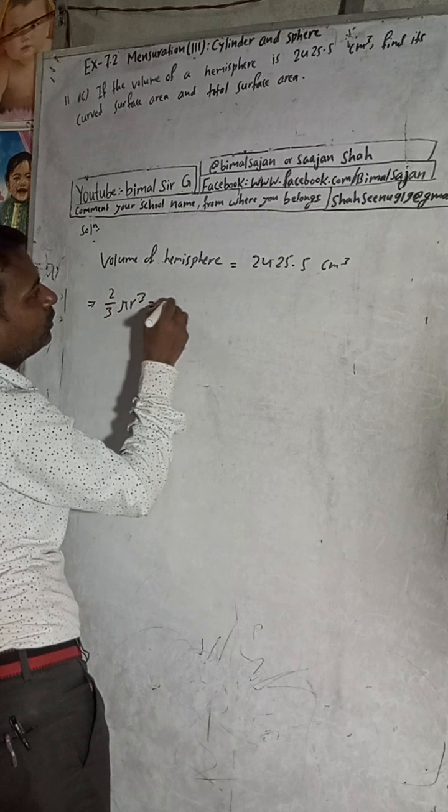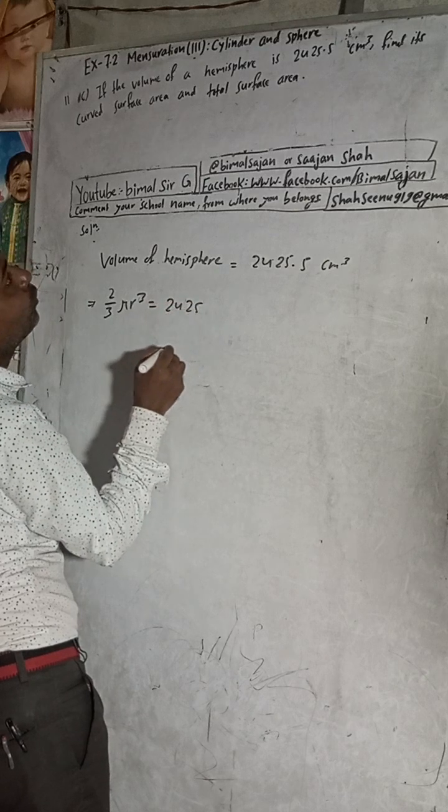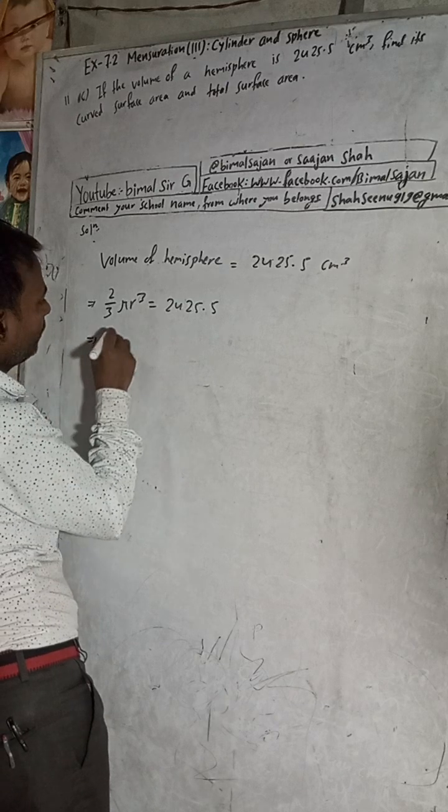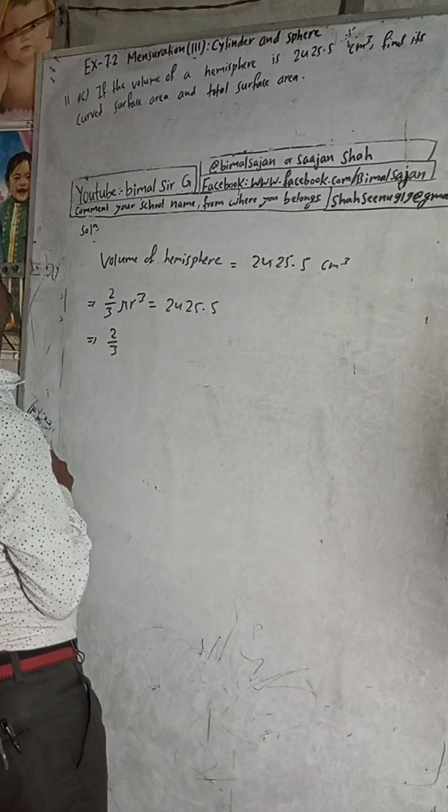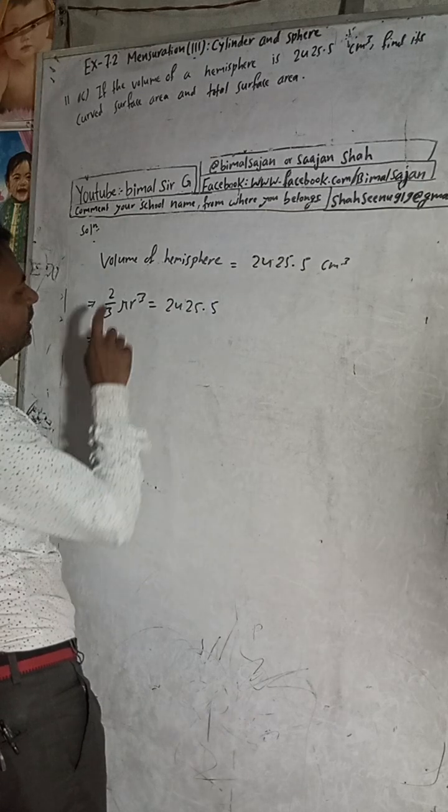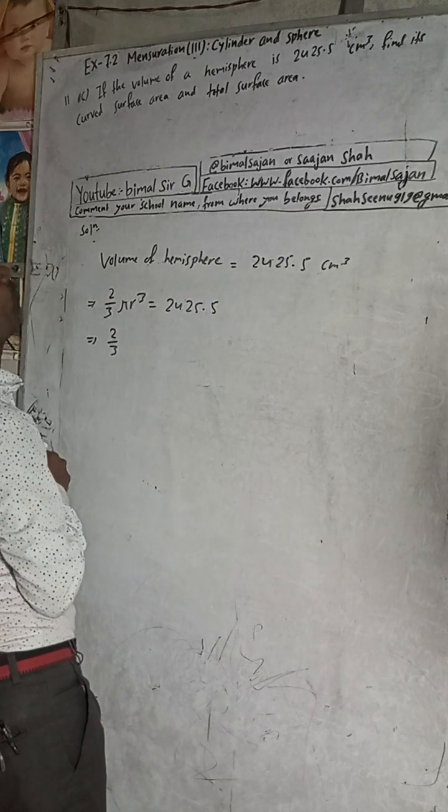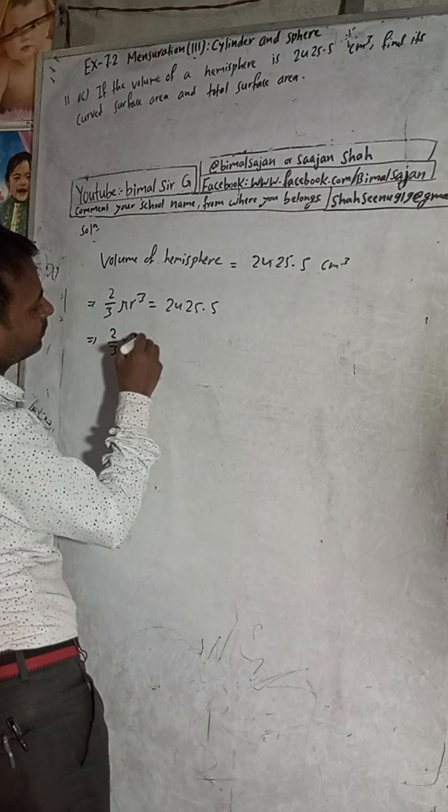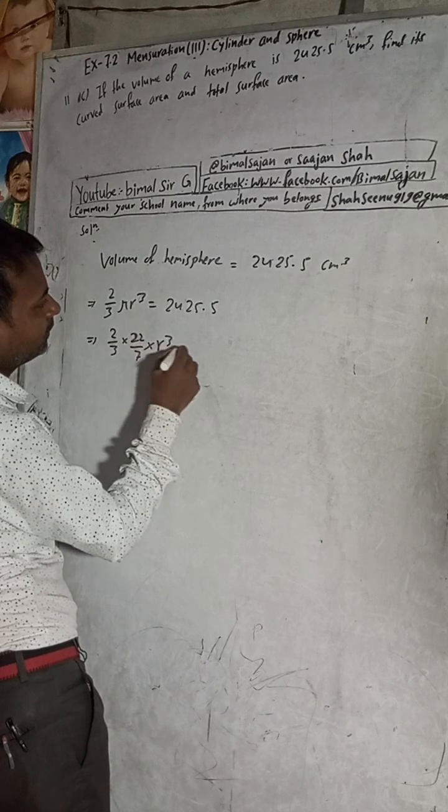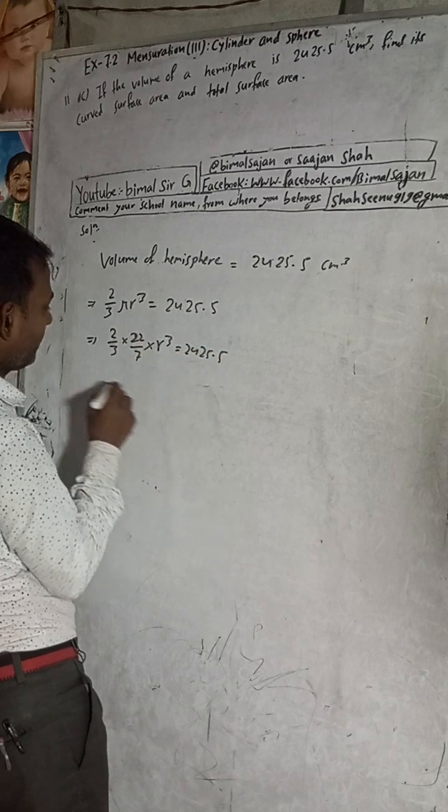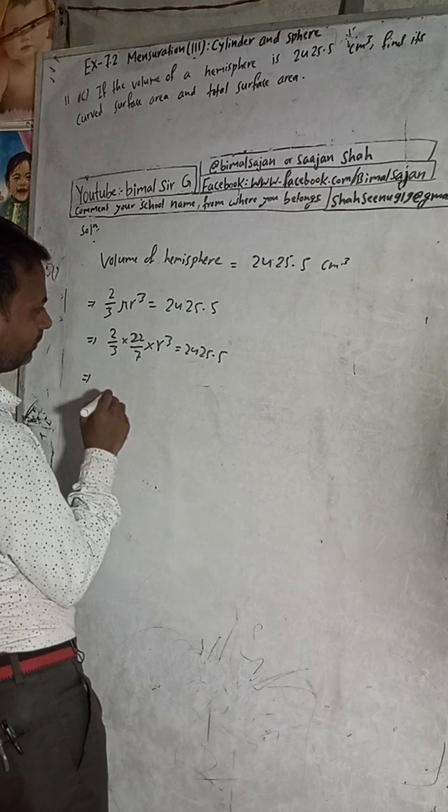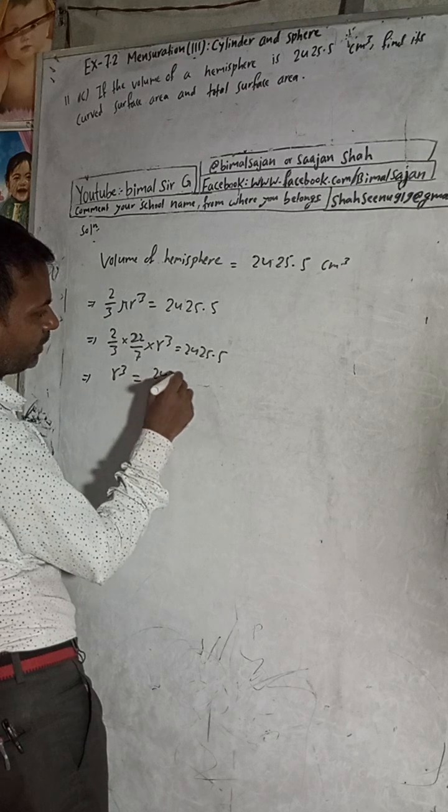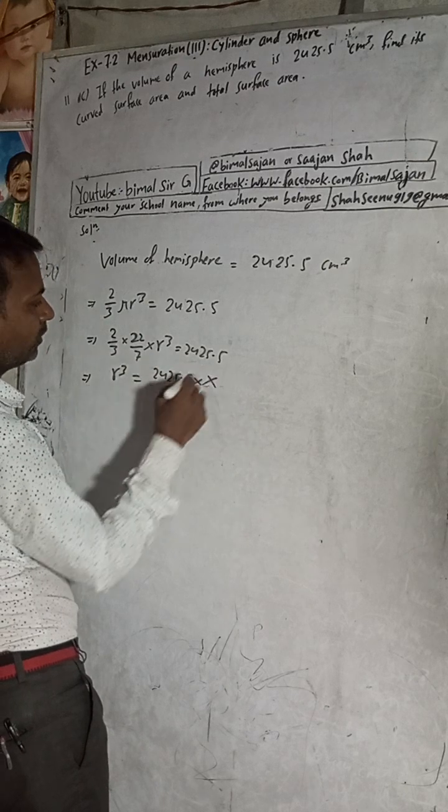So 2/3 πr³ equals 2425.5. Now substituting π as 22/7, we get r³ equals 2425.5 times 7 divided by 44. This seven cancels, and we arrange the terms.